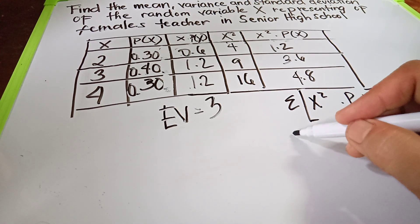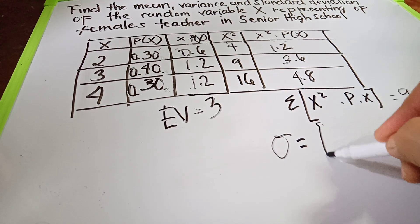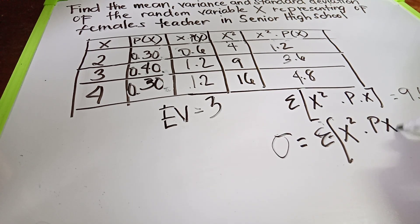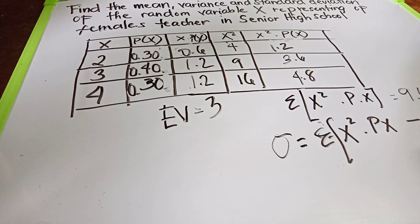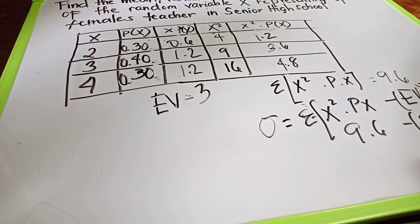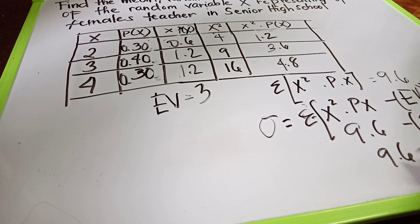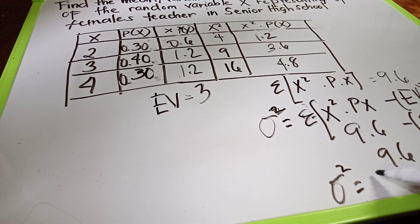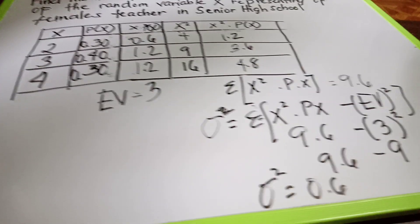To get the variance, we use the formula: variance = Σ[x²·P(x)] minus [E(X)]². That is 9.6 minus 3 squared. Three squared is nine, so 9.6 minus 9 equals 0.6. The variance is 0.6.